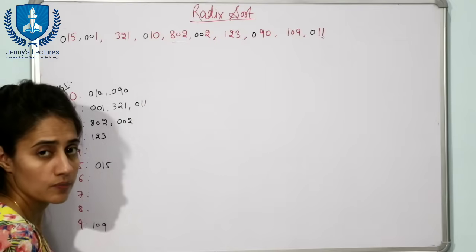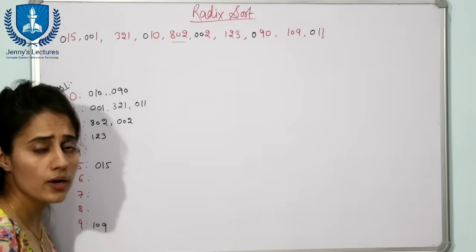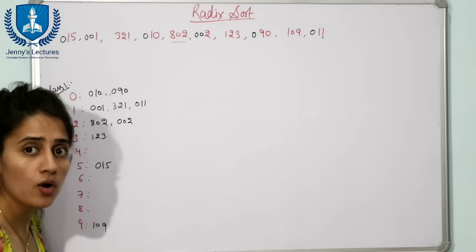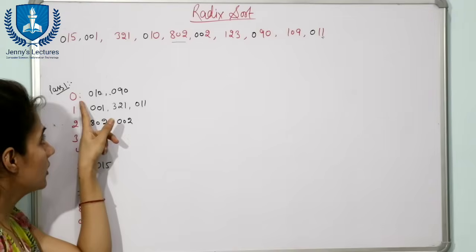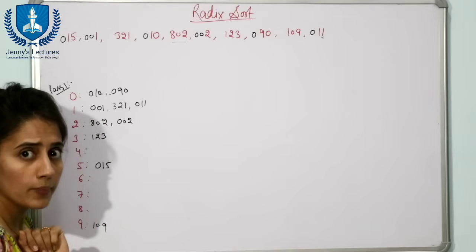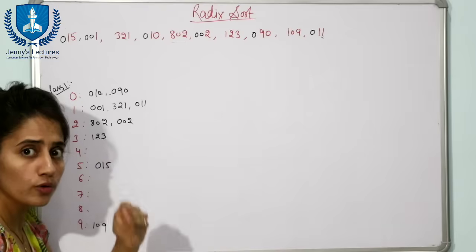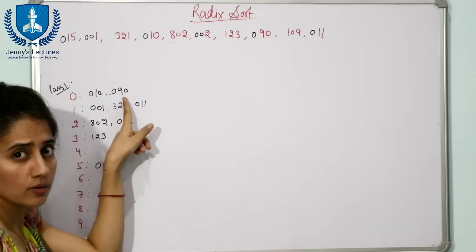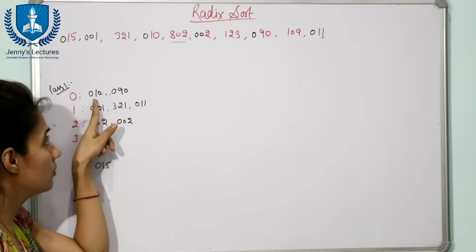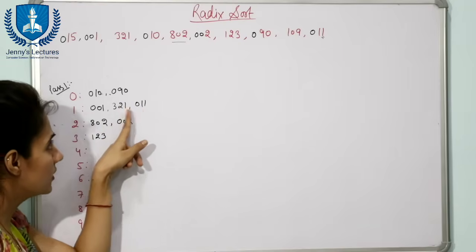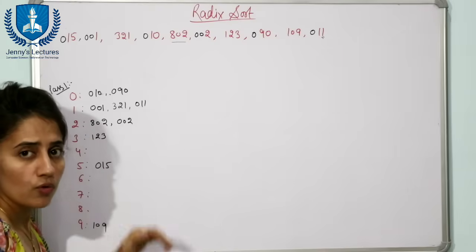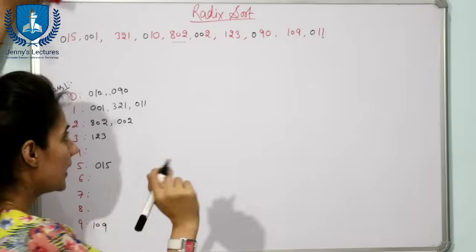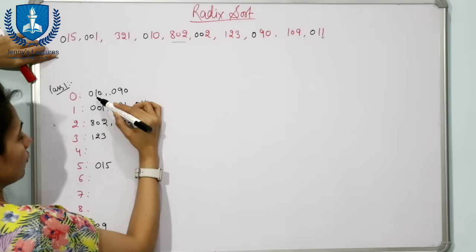Now the next step is to remove the data from these buckets, starting from the zeroth bucket. If a bucket has two numbers, we remove the first number first — this is FIFO order. For bucket 1 also, we remove the first number first, then the next. We remove numbers one by one from all buckets.